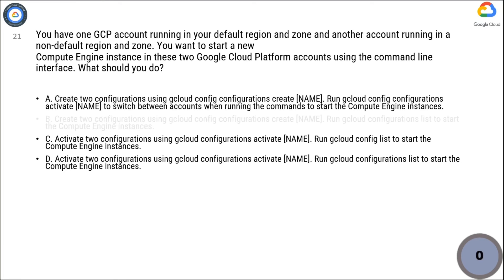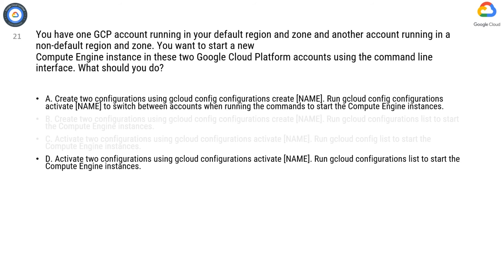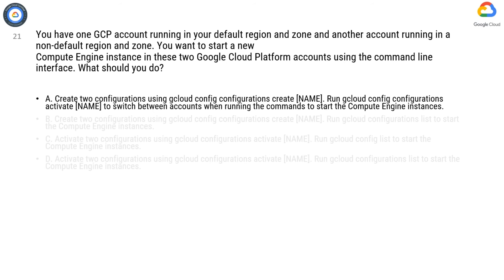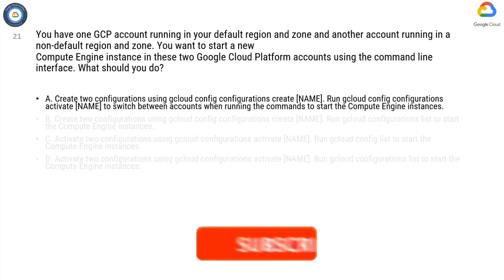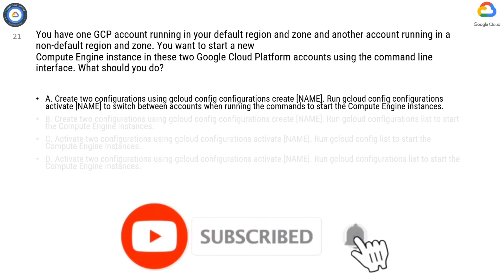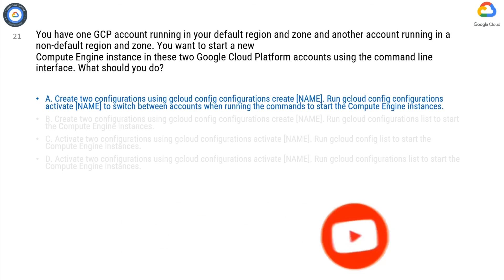Refer to GCP documentation. Options B, C, and D are wrong, as gcloud config configurations list does not help create instances — it only lists existing named configurations. Obviously A is correct. All the other options don't make any sense when they say run gcloud configurations list to start the Compute Engine instances.